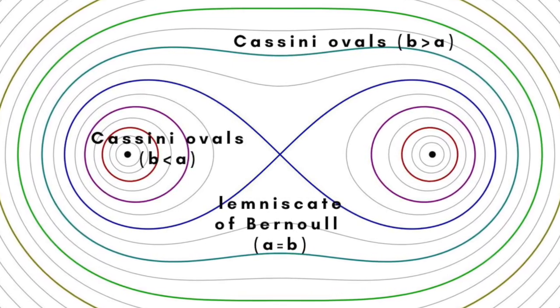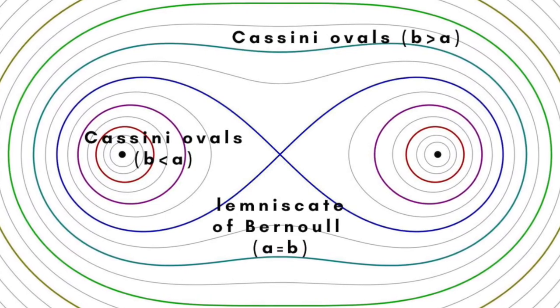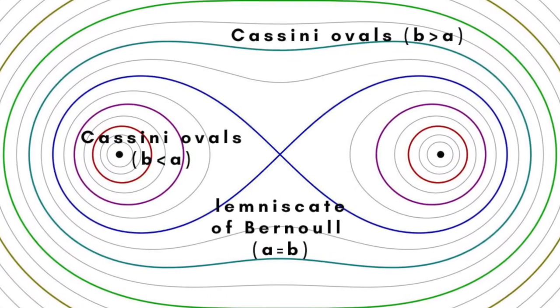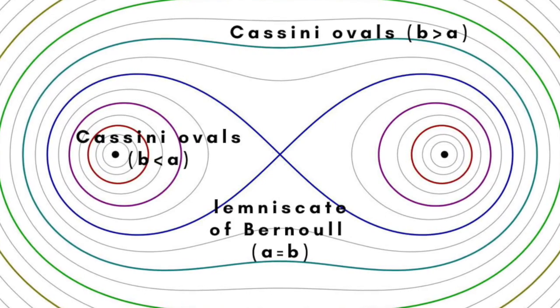If b is greater than a, the Cassini oval lies outside and encloses the Lemniscate. If b is less than a, the curve lies wholly within the two loops of the Lemniscate.